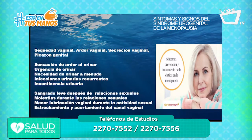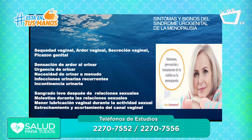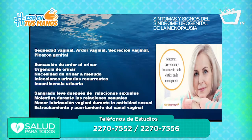En esta lámina vemos los síntomas del síndrome urogenital: ardor en la vagina, sequedad vaginal, a veces secreciones porque la vagina está bien adelgazada — muchas veces casi que sangra — y puede haber sangrado después de las relaciones. También los síntomas de vía urinaria y las infecciones urinarias recurrentes, que entre el urólogo y el ginecólogo se manejan. La vida sexual está también bien afectada por la deficiencia de estrógeno, pero esto se puede recurrir con tratamiento. Hay esperanza.